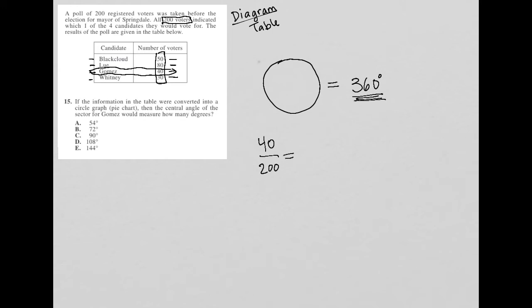That represents 20%, right? So that's going to be 0.20, which is 20% of the number of votes.